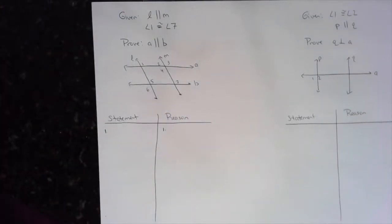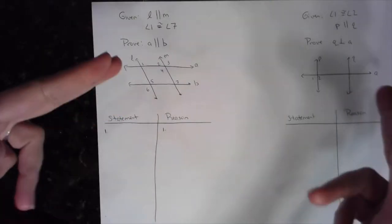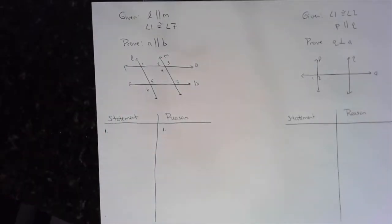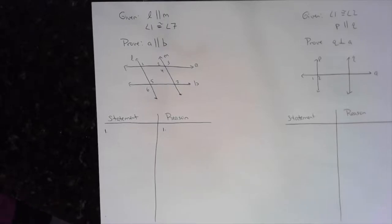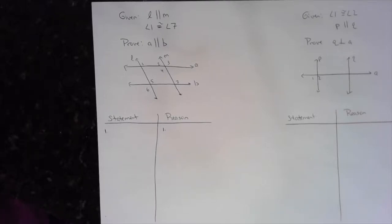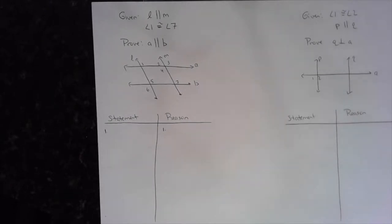You have to know your properties and theorems — make sure you have those down. Especially with angles and parallel lines, you need alternate interior, corresponding, same side interior, same side exterior, alternate exterior — you need to know all these different properties. Once you also know transitive and symmetric properties, then we can go ahead and work on these proofs.